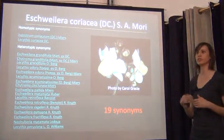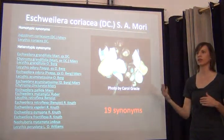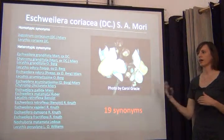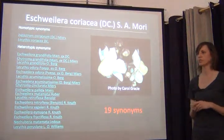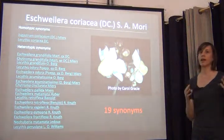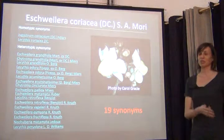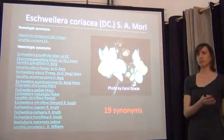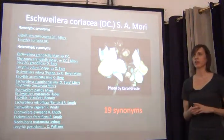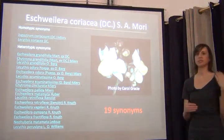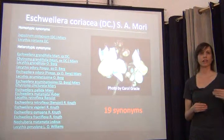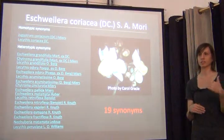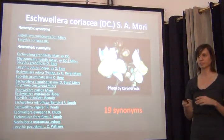This gives users the opportunity to look at an authority file and find the accepted name for the taxon. It gives you the opportunity to curate your herbarium at the time — move the specimen under the correct name — or at least flag the record in the database that it may be filed under this name, but the accepted name is this.